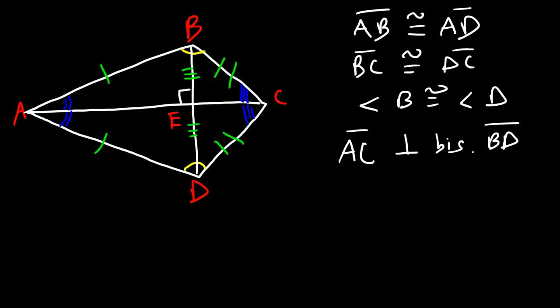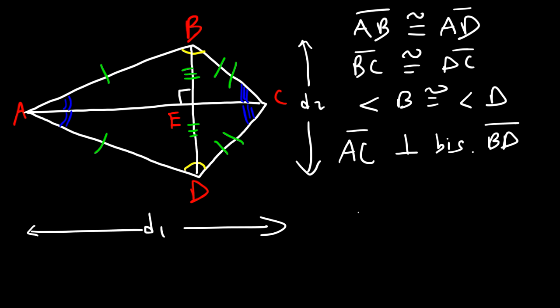We'll call D1 the length of diagonal one and D2 the length of diagonal two. Like a rhombus, the area of a kite is one-half times D1 times D2. That's a basic introduction to kites — those are the properties you want to be familiar with. Now let's work on some problems.